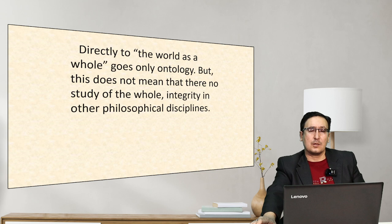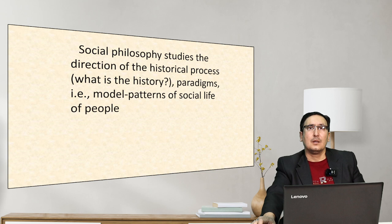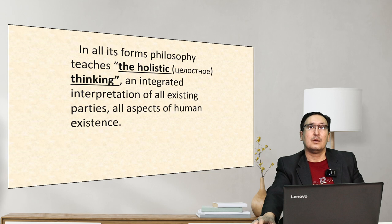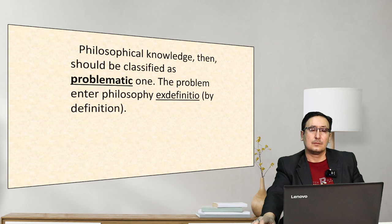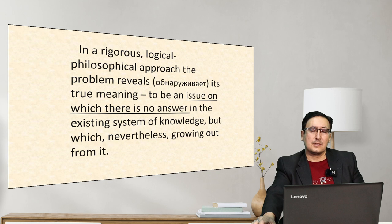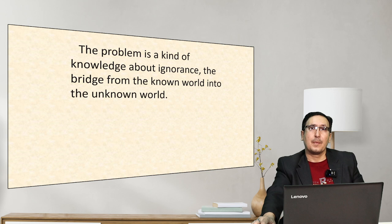Ontology deals directly with the world as a whole. Social philosophy studies the direction of historical process, paradigms, and modern patterns of social life. Philosophy teaches holistic thinking — an integrated interpretation of all existing aspects of human existence. Philosophical knowledge should be classified as problematic; by definition, a philosophical problem is an issue on which there is no answer in the existing system of knowledge, but which nevertheless grows out of it.